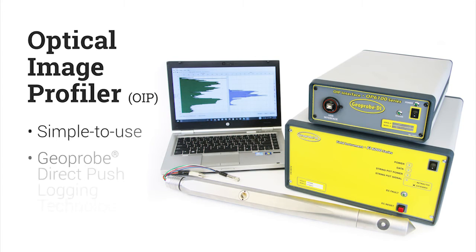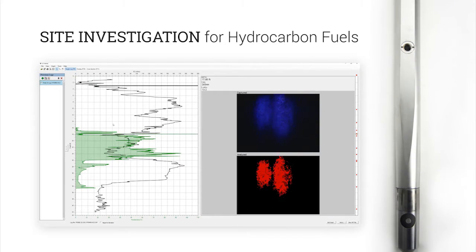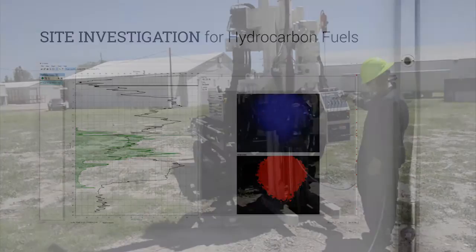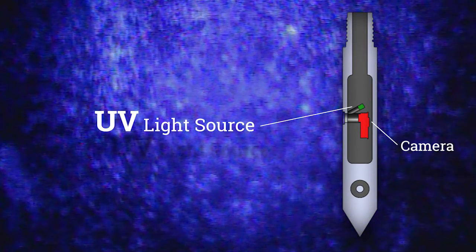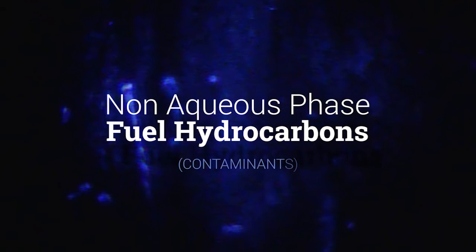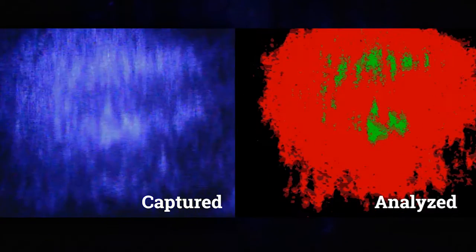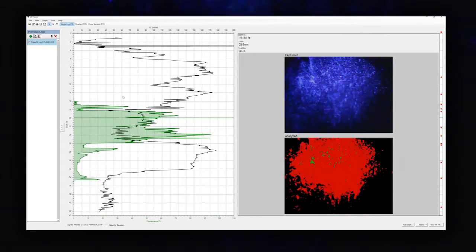The Optical Image Profiler from Geoprobe is a simple-to-use direct push logging technology used to investigate sites where hydrocarbon fuels may be present. As the OIP probe is pushed to depth, a UV light source illuminates the soil and a photo is taken by the built-in camera every 15mm. The UV light illuminates non-aqueous phase fuel hydrocarbon contaminants in the soil, causing them to fluoresce. These images are analyzed for hydrocarbon fluorescence in real-time and a log is created from the cross-section to help you create a highly detailed site model.